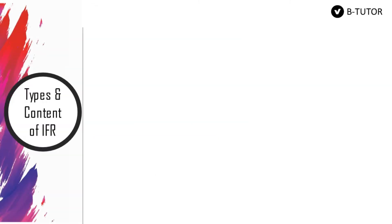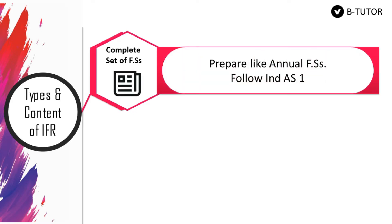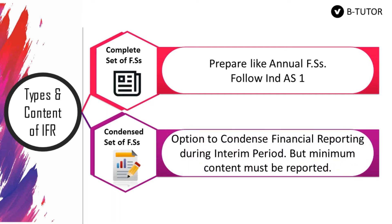Our next topic: types and content of IFR. We have two options to report interim financial statements. First option: choosing a complete set of financial statements. Under this option, we must prepare interim financial statements like annual financial statements, so we need to follow IAS 1 Presentation of Financial Statements. Second option: choosing a condensed set of financial statements. Under this option, we can condense our financial reporting, but we must report the minimum content. Out of these two, IAS 34 recommends the second option.